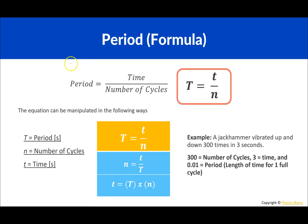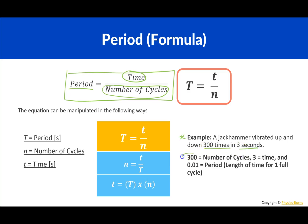Here's the main formula for period. Period is equal to the time divided by the number of cycles something takes. As we learned before, period is how long it takes to make one cycle, but sometimes we have more information. For example, a jackhammer vibrated up and down 300 times in three seconds — 300 is the number of cycles, three is the time. The period is 0.01 seconds — that's how long it took the jackhammer to make one complete up and down vibration.